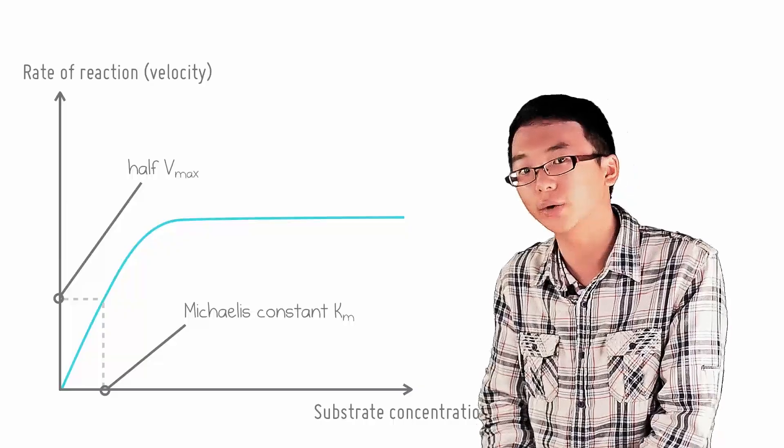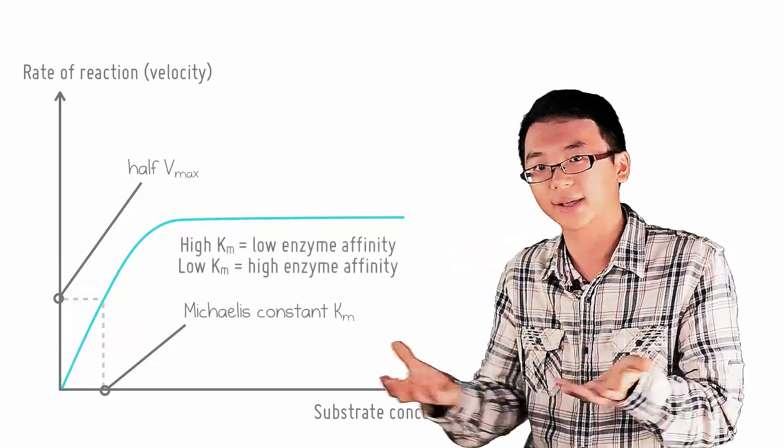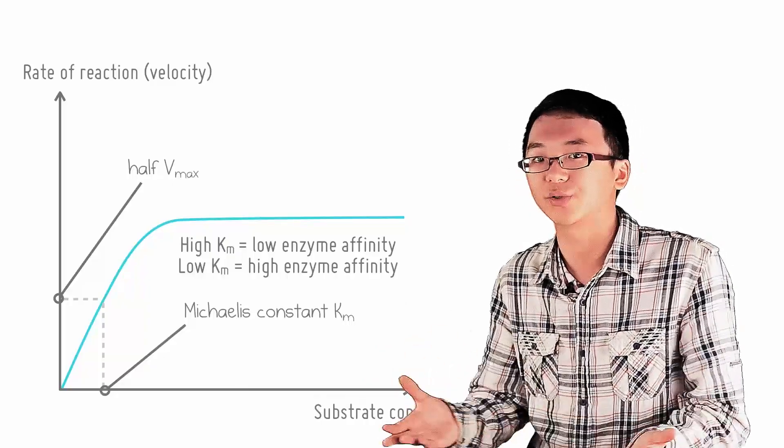If an enzyme has low Km, it means only a small substrate concentration is needed to reach half the maximum rate, implying a high binding affinity between the enzyme and the substrate.